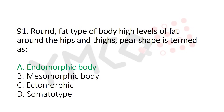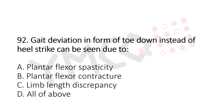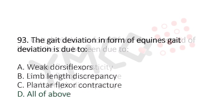Question 92: Gait deviation in the form of toe down instead of heel strike can be seen due to — option A: plantar flexor spasticity, option B: plantar flexor contracture, option C: limb length discrepancy, option D: all of the above. The answer is option D: all of the above.